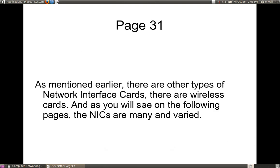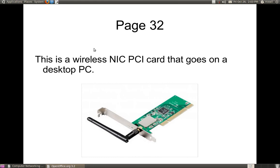There are other types of network interface cards — there are wireless cards. As you can see, once again we have a wireless network interface card, a wireless NIC, and it's a PCI card. Because, as you can see at the bottom, these fit into a PCI slot on your desktop computer. What makes this different from a regular PCI NIC card is that it doesn't have an Ethernet port, but it emits a radio signal through this antenna. What it does is emit a signal that goes out onto the radio airwaves.